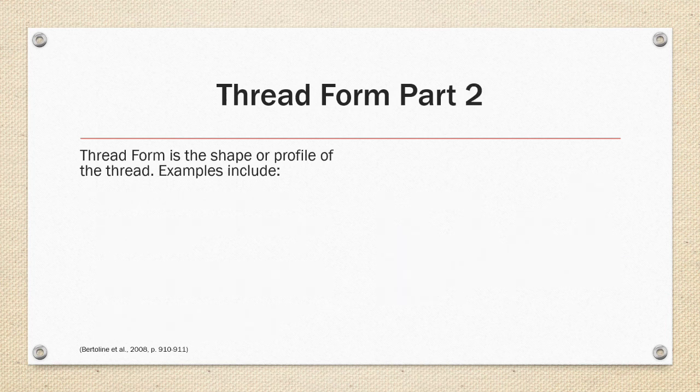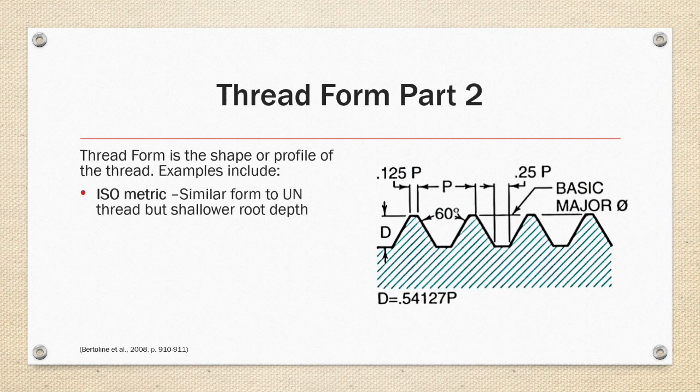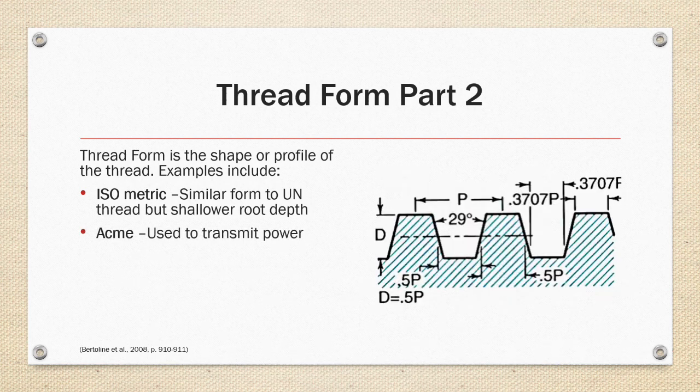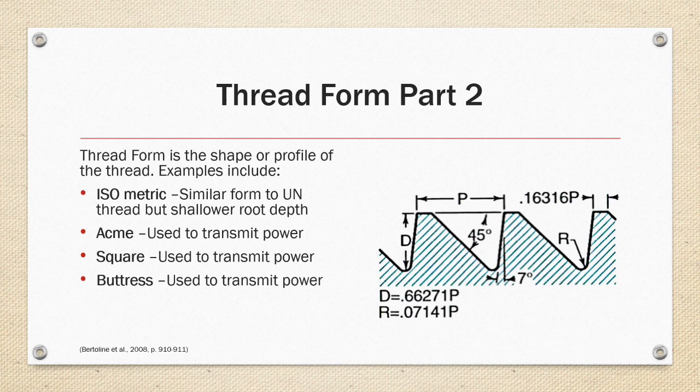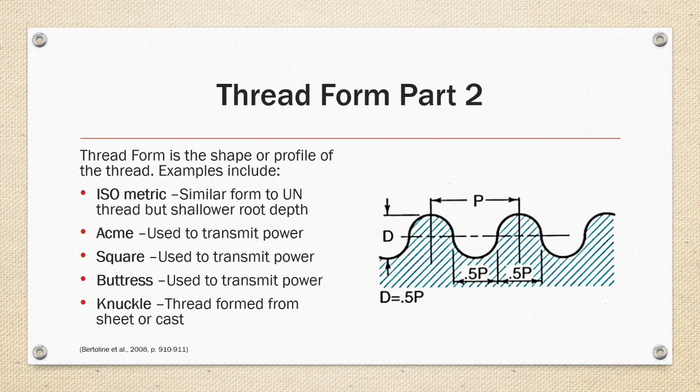The thread form examples also include the ISO metric form which is similar to the UN thread but has a shallower root depth and all the dimensions are called out in metric. The ACME thread which is used primarily to transmit power as is the square thread. The buttress thread can also be used to transmit power but has also been used in high pressure applications. And the knuckle thread is designed to be formed or cast from a sheet and is common in light bulbs and water bottles.